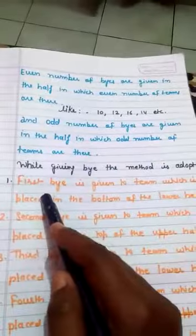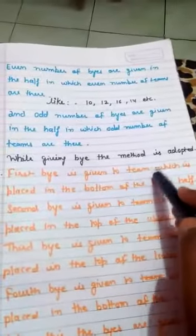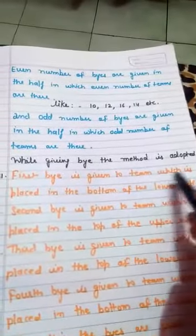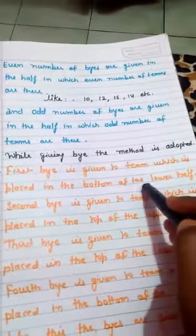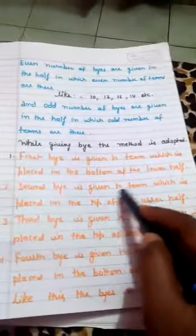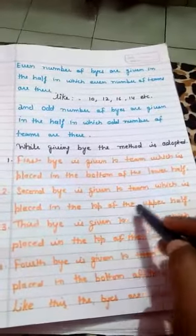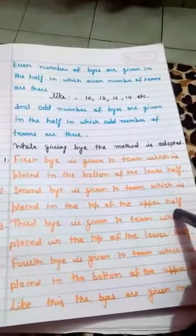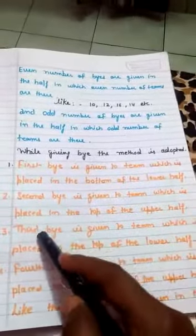Regarding the order of buy assignment: the 1st buy is given to the team placed at the bottom of the lower half. The 2nd buy is given to the team placed at the top of the upper half — that is, at the bottom of the top half.